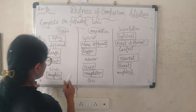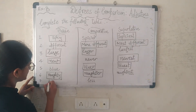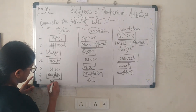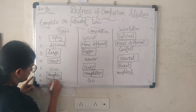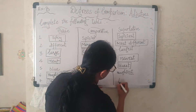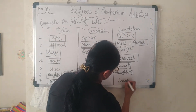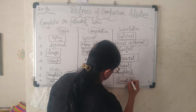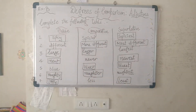The next entry is 'less': the base form is 'little' and the superlative is 'least'. Then the eighth adjective is 'happy': comparative is 'happier' (h-a-double p-i-e-r) and the superlative is 'happiest' (h-a-double p-i-e-s-t).